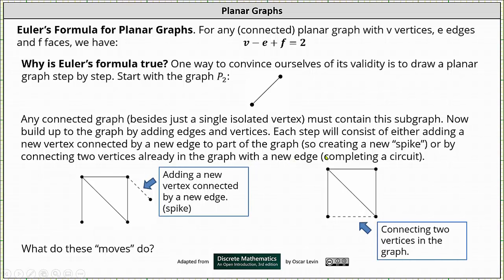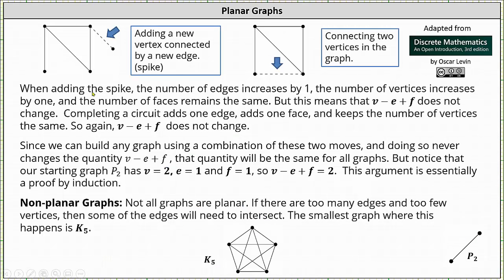So again, when building the graph, each step, we will either add a spike, which is an edge and a vertex shown here on the left, or just one edge shown here on the right by connecting two existing vertices. And what do these moves do? When adding a spike, meaning an edge and a vertex shown here on the left, the number of edges increases by one, the number of vertices increases by one, and the number of faces remains the same. But this means that V minus E plus F does not change because V and E increase by one, and one minus one is zero.